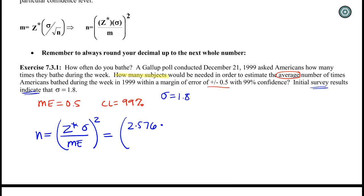So 2.576, our sigma is 1.8, and this is all over our margin of error. Then we're going to square everything. That's it.